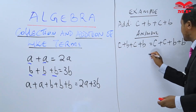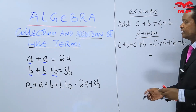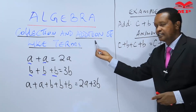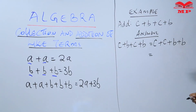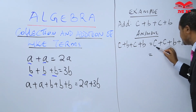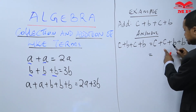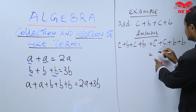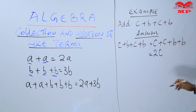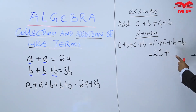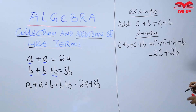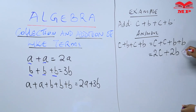We can now add. We are learning how to collect and add like terms. C plus C — these are two C's, so this can be written as 2C. Then we add the B's — there are also two B's, so we write 2B. So we have answered this question: the answer is 2C plus 2B. This is correct.